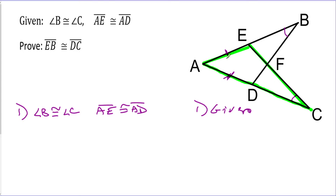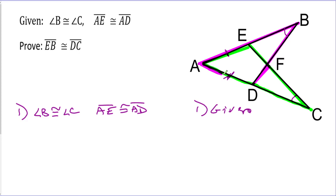I'm going to highlight this whole side because that uses AD and it uses DC, which is one of the things I'm trying to find. And there's AE — I like that. If you notice, this triangle uses everything: AE, AD, angle C, and one of the things I'm trying to find, DC, is also part of that. So that's a really good triangle. I'm going to do the same thing with this other triangle — it's also, in a very similar way, helpful. If I can prove those two triangles are congruent, that'll get me very close to showing that EB is congruent to DC.